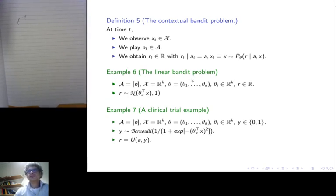An interesting case is the linear bandit problem where your actions are finite and the observations come from a finite dimensional Euclidean space. There are n different parameter vectors. Each vector has the same dimensionality as observations. So that when you play action A, the reward you get has a mean equal to the dot product between theta A and X, and it's normally distributed with variance one.